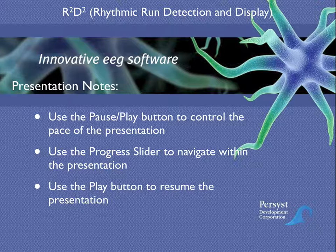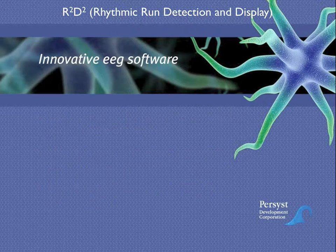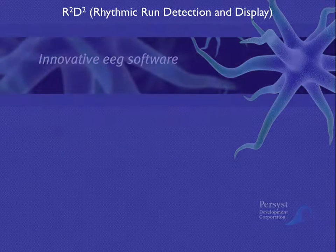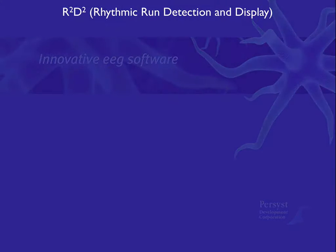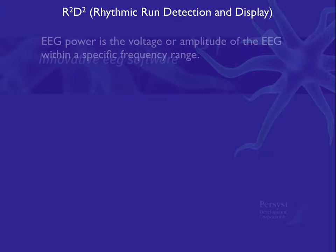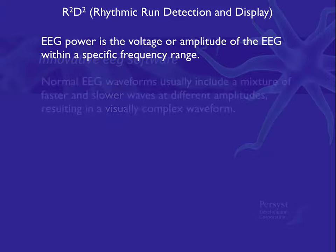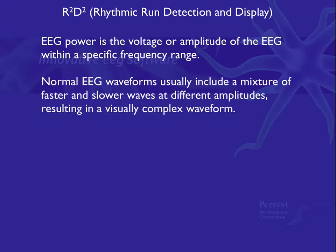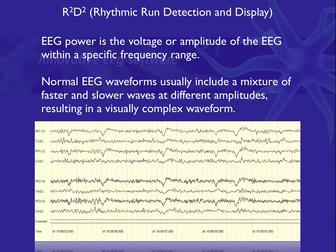Since we will be talking about rhythmic EEG power, we should touch briefly on what EEG power is. EEG power is the voltage or amplitude of the EEG within a specific frequency range — in short, power is how tall and how fast. Normal EEG waveforms usually exhibit multiple frequencies at different amplitudes, resulting in a visually complex waveform.